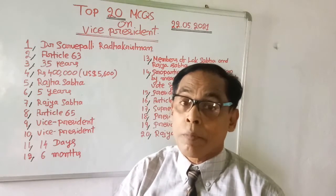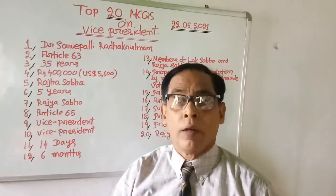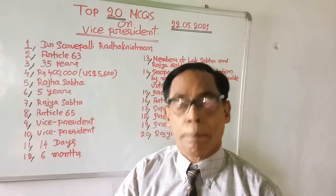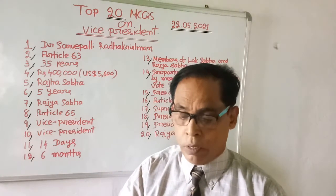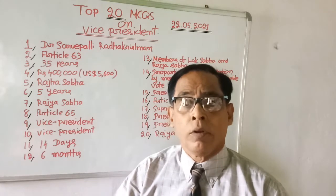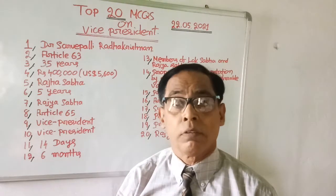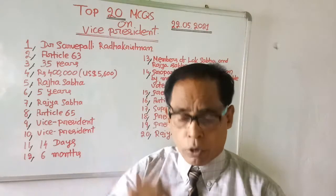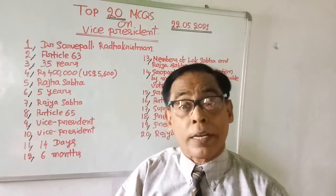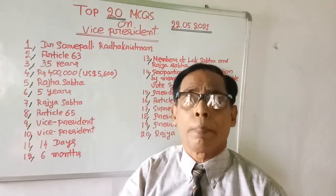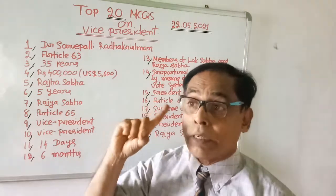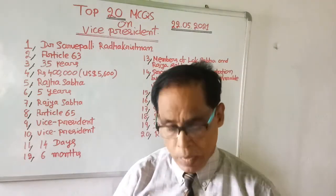Question number nine: If the President is the number one citizen of India, who is the number two citizen? Choices are Speaker of Lok Sabha, Chief Justice of Supreme Court, Vice President of India, and Attorney General of India. The right answer is Vice President of India. He is the number two citizen of our country.